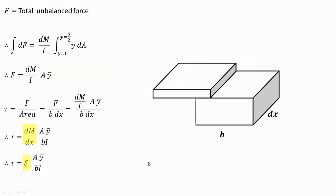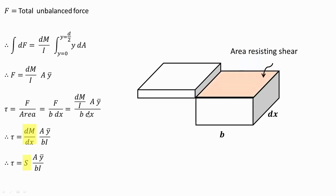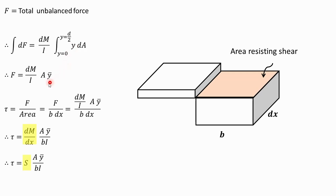The total unbalanced force is found by integrating the equation. The integral of dF equals dM/I, which is a constant, multiplied by the integral of Y·dA. The integral of Y·dA is by definition equal to A·Ȳ, where A is the area above section EF and Ȳ is its centroidal distance from the neutral axis. This has units of mm³. So the total unbalanced force equals (dM/I)·A·Ȳ.